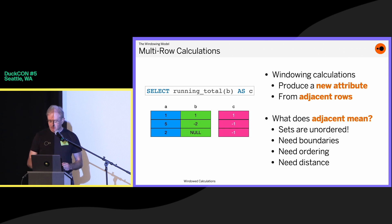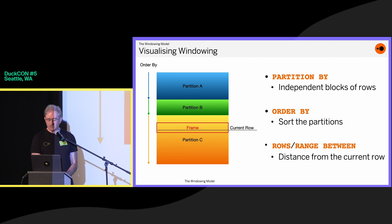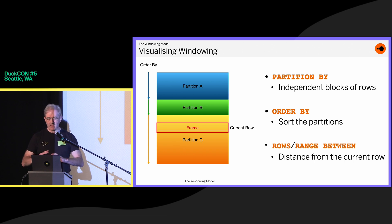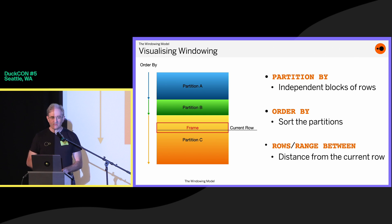So the Standards Committee came up with a way of specifying this, and this is roughly what it looks like. You partition the data into independent blocks, you sort each block, and then for each row you can say how far apart you are. And if this looks complicated, that's because it is — you have to sort, you have to break things up, it takes a lot of time.